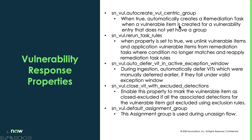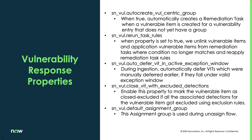The next set of properties covers auto-create — we're going to automatically create a remediation task when that vulnerable item is created for a vulnerability entry that does not yet have a group already assigned. This is on out of the box. The rerun task rules property means that if the condition changes for that vulnerable item associated to a remediation task and the condition no longer matches, we're going to unlink that vulnerable item from that remediation task and rerun it back through the remediation task rules.